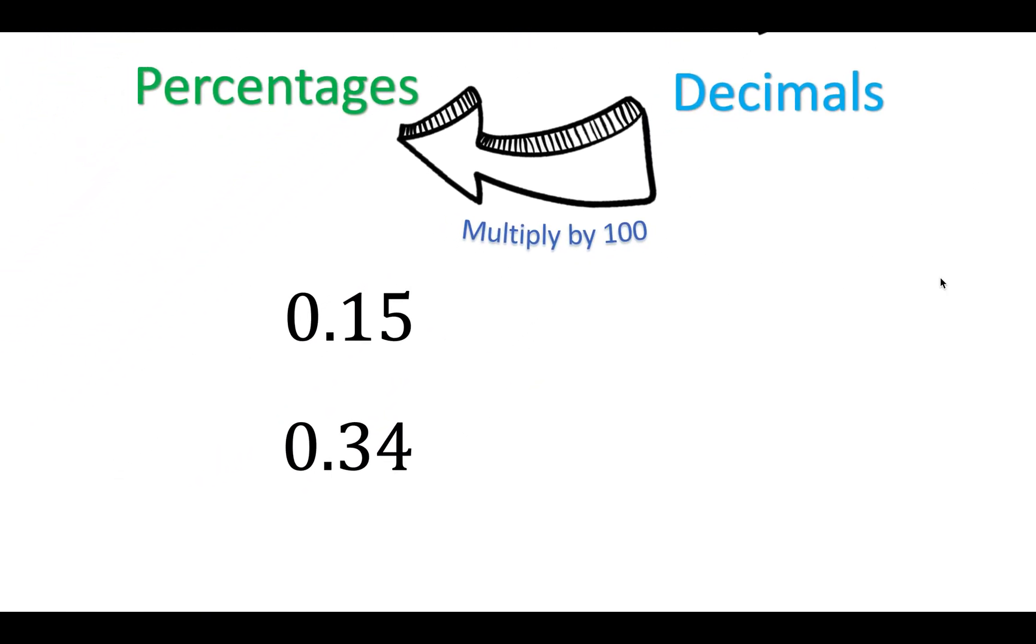Now, to go from decimals to percentages, we use the same decimals as before, and all we do is multiply by a hundred. And we get fifteen percent and thirty-four percent. Don't forget your percentage signs.